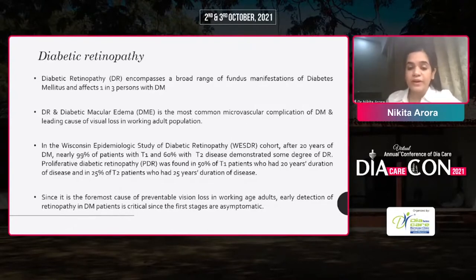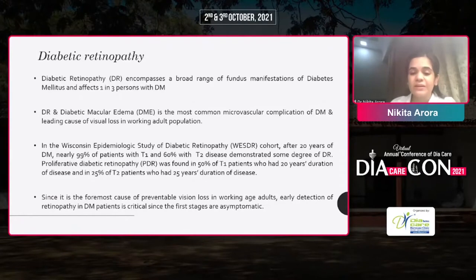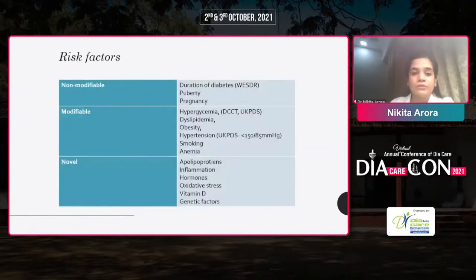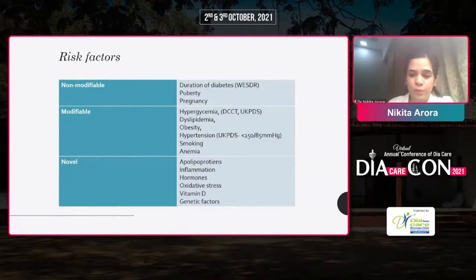Since it is the foremost cause of preventable vision loss in working age adults, early detection of retinopathy in DM patients is critical, as the first stages are often asymptomatic. The risk factors for development of DR include non-modifiable factors such as duration of diabetes, puberty, and pregnancy; modifiable factors such as hyperglycemia, dyslipidemia, obesity, hypertension, smoking, and anemia; and novel risk factors including apolipoproteins, inflammation, hormones, oxidative stress, vitamin D, and genetic factors.